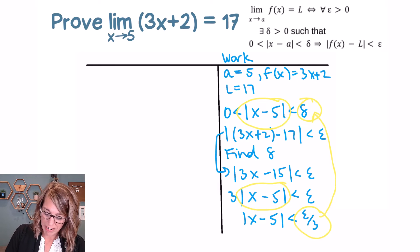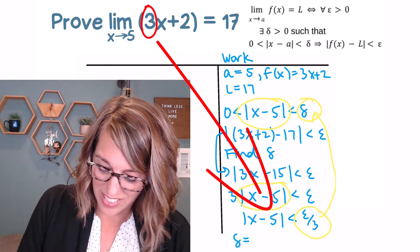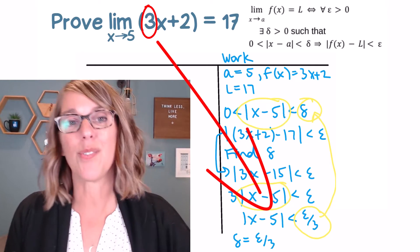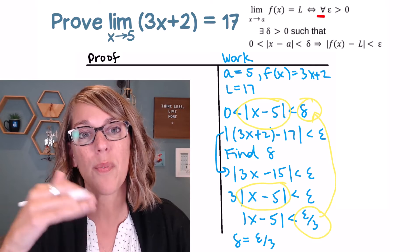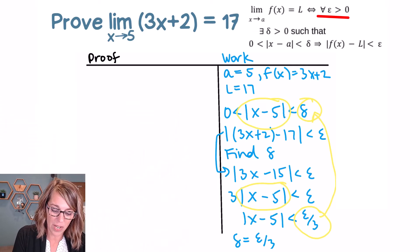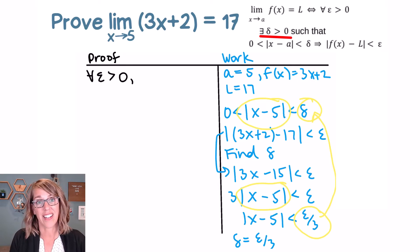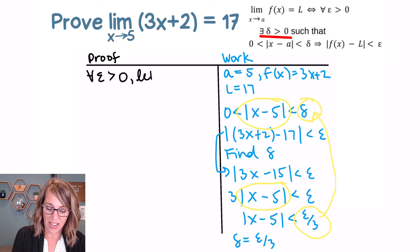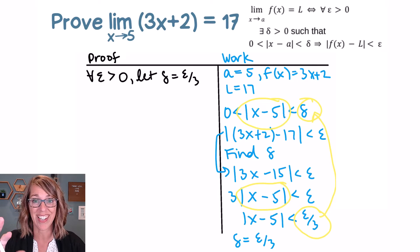A really helpful hint: if you're working with a linear function, you can just divide by the lead coefficient. So delta is epsilon thirds. For our proof, I start with the 'for every' statement and use the definition as my roadmap. I say: for every epsilon greater than 0, there exists a delta — we found it — so we let delta equal epsilon thirds, because epsilon is greater than 0, this delta is also greater than 0 for free.